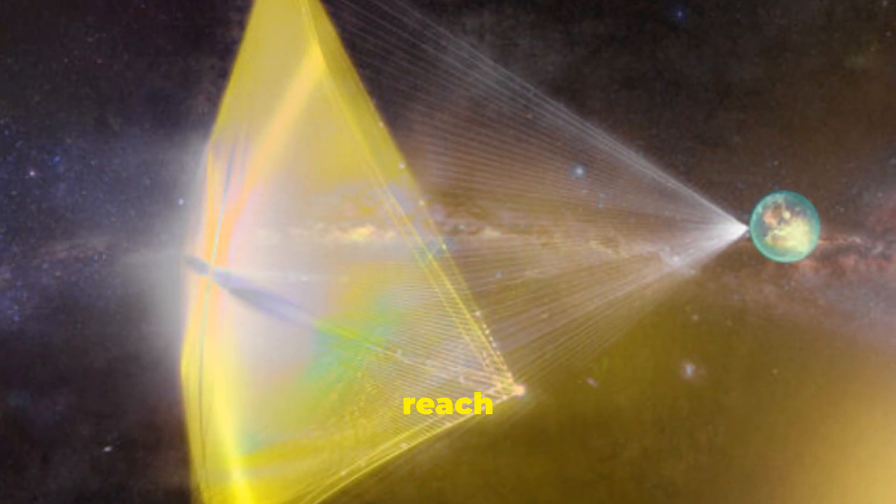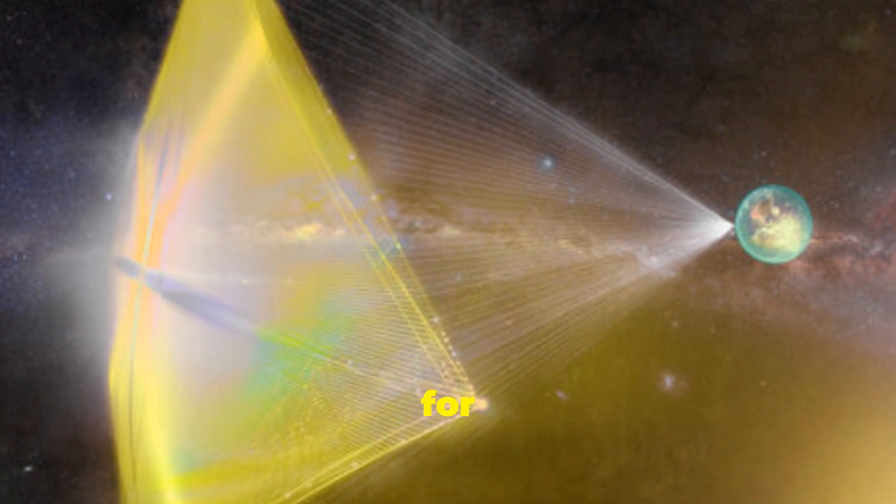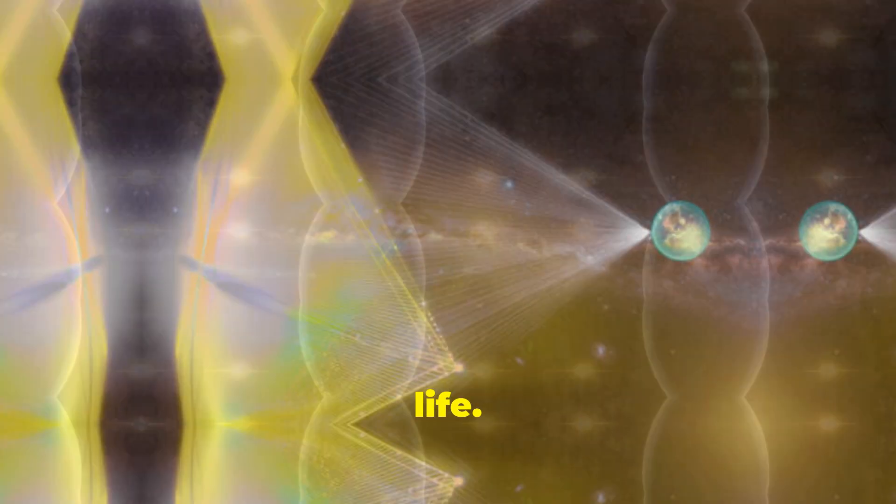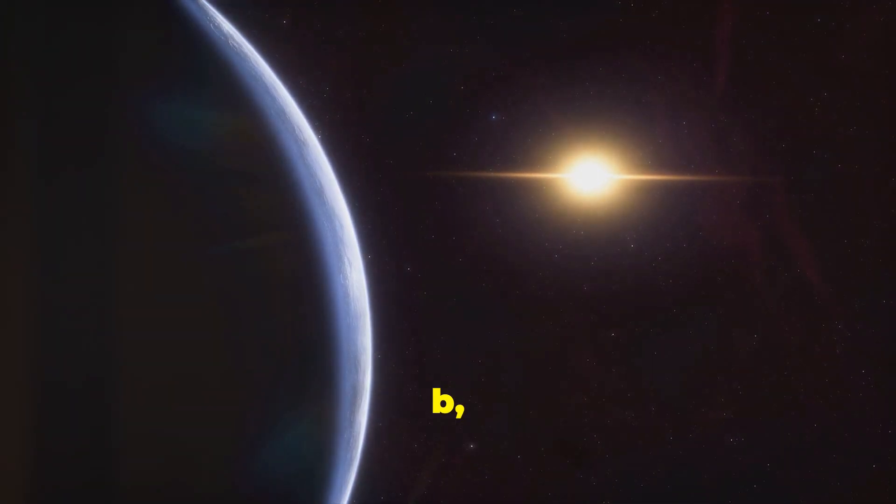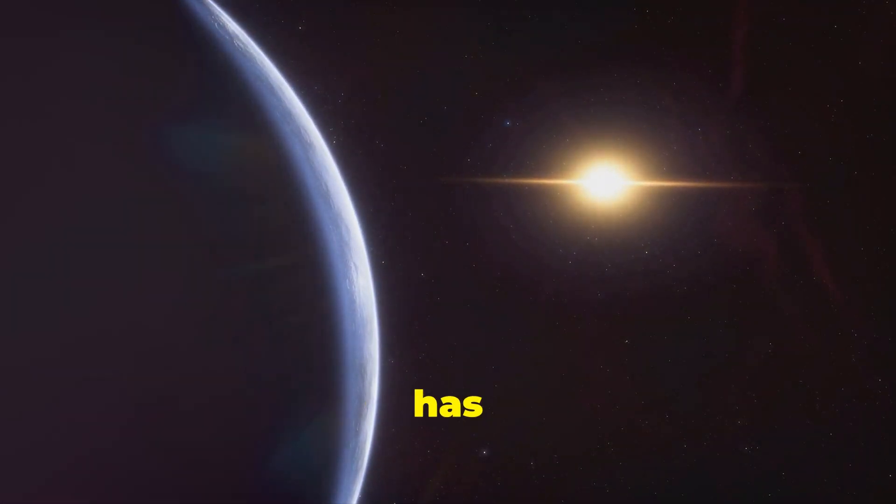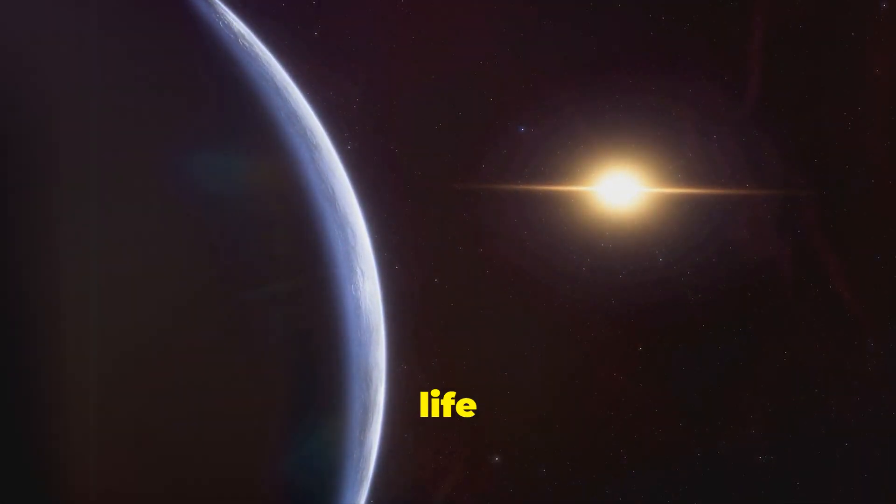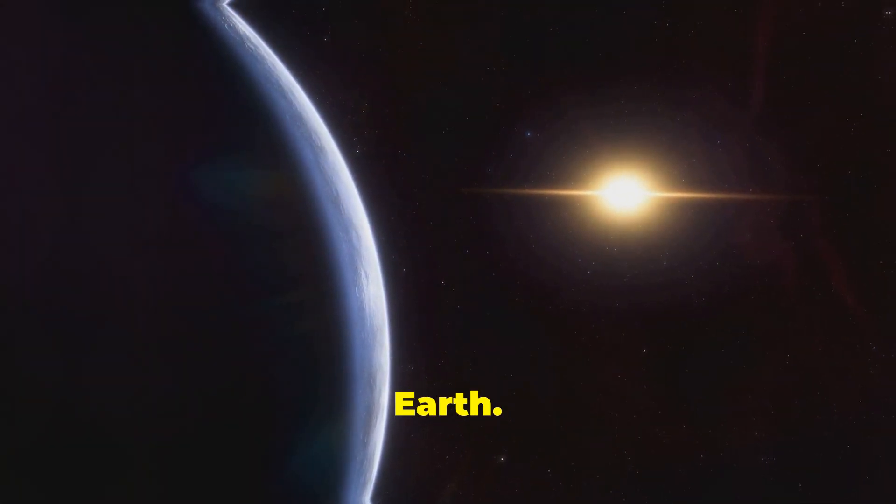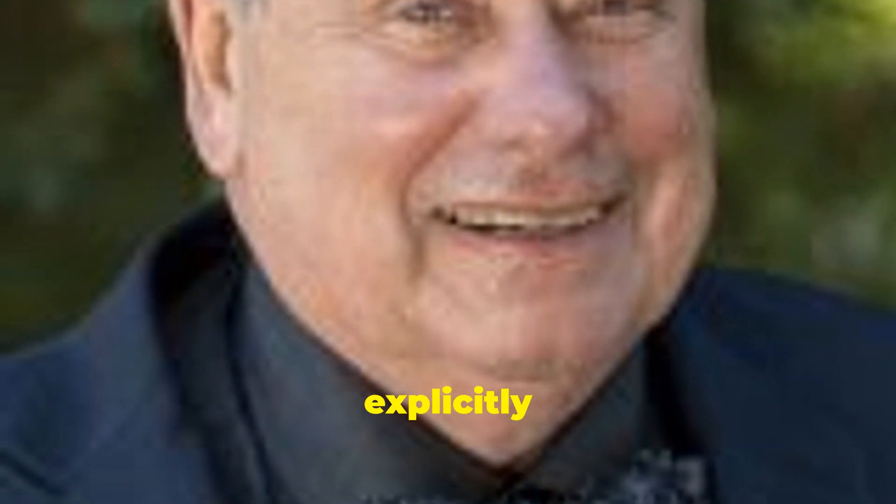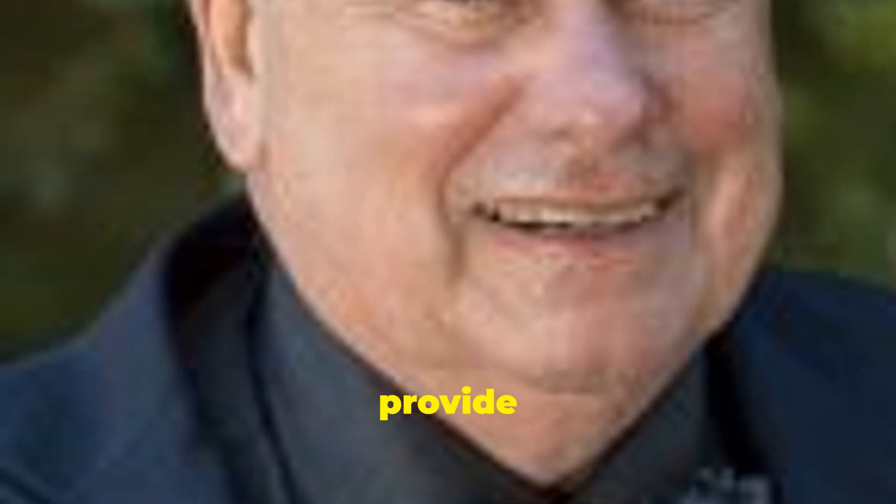Furthermore, the quest to reach Alpha Centauri is deeply intertwined with the search for extraterrestrial life. The discovery of Proxima Centauri b, a potentially habitable planet orbiting Proxima Centauri, has further fueled excitement about the possibility of finding life beyond Earth. While Breakthrough Starshot is not explicitly designed to search for life, the data it gathers about Alpha Centauri and its planets could provide valuable clues in our search for cosmic neighbors.